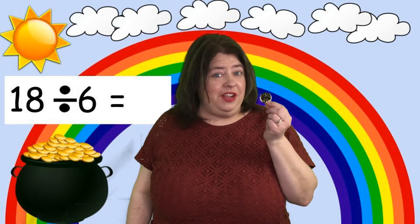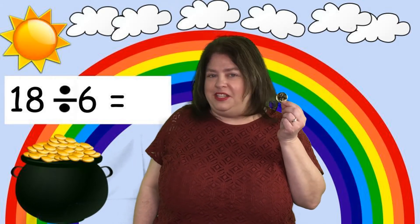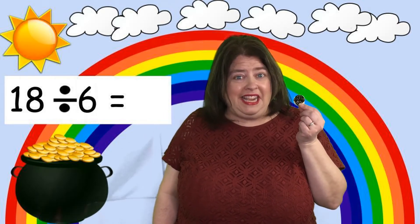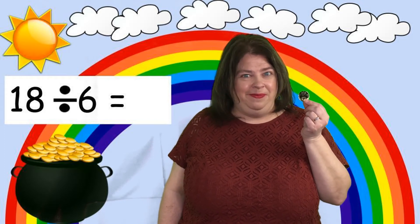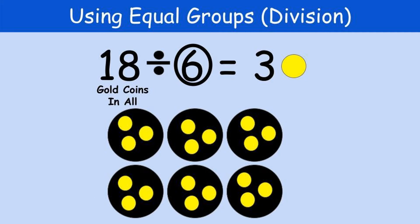Our next problem is 18 divided by 6. We can figure this out by making 6 groups and distributing coins into each one until we get to 18. We're starting with 18 gold coins in all — 18 yellow circles. I circled the number 6 to represent 6 pots of gold shown as 6 black circles. I passed out the yellow gold coins until they all have an equal amount. 18 divided by 6 equals 3 because each pot of gold has 3 gold coins in it.